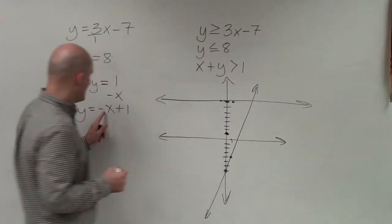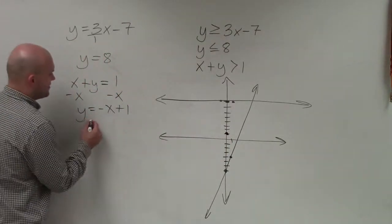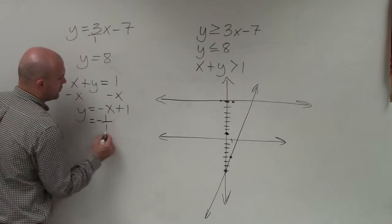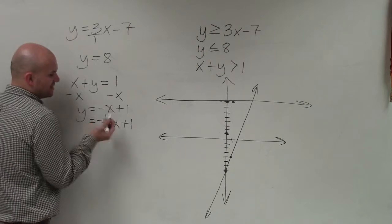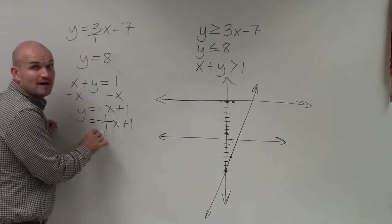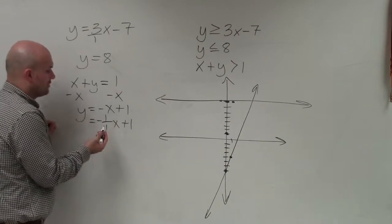But my slope here is a negative. Well, really, that represents a negative 1 over 1, x plus 1. So when writing the slope as a negative, we just need to make sure we can either put the negative in the numerator or have the negative in the denominator. Either one will really work.